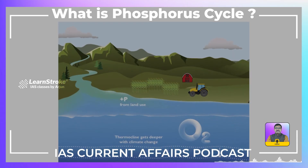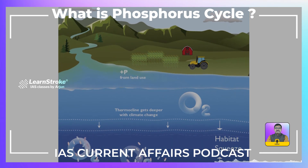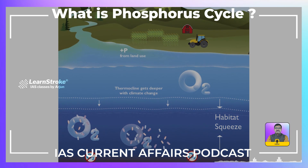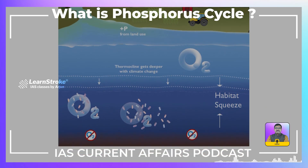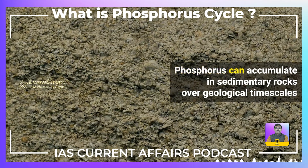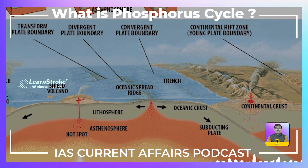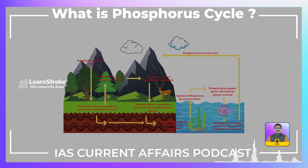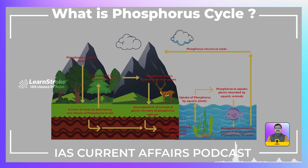When leaching or runoff occurs, excess Phosphorus in the soil can be leached into groundwater or carried away by runoff during rainfall. Phosphorus can enter aquatic systems through runoff from agricultural fields, urban areas, and wastewater discharges. Phosphorus can accumulate in sedimentary rocks over geological timescales. Through geological processes such as sedimentation and tectonic activity, Phosphorus can be stored in the earth's lithosphere for longer periods before being released through weathering and erosion.